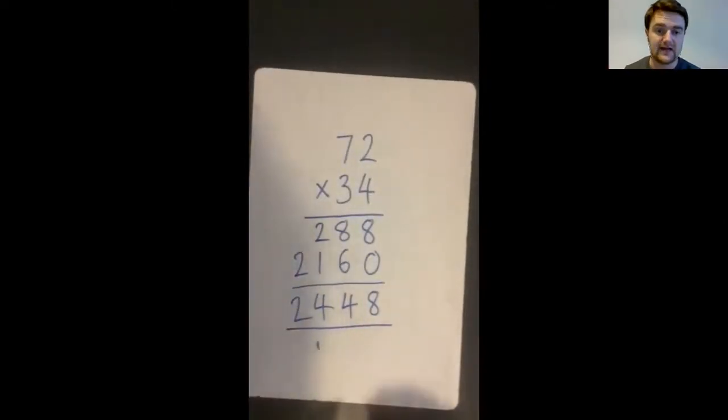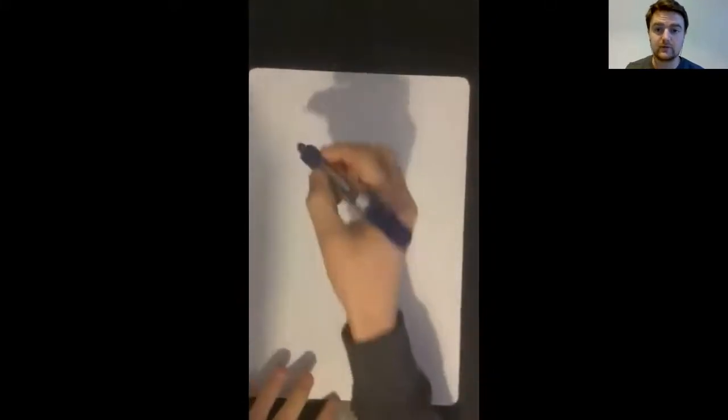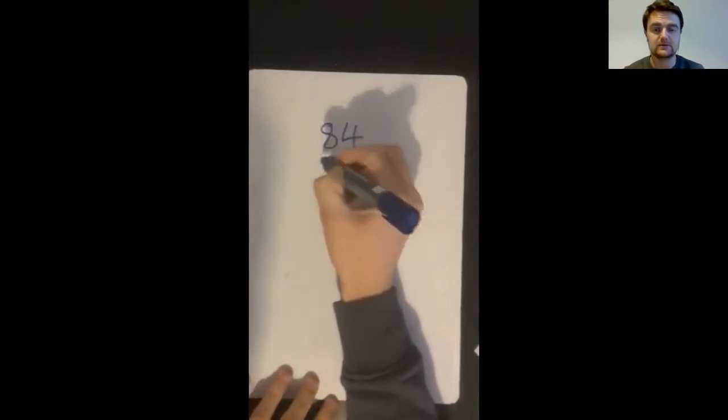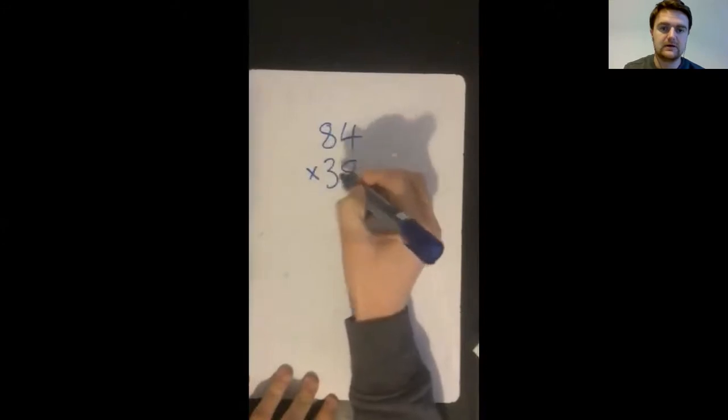So let's have a look at a second example as well. You can see that the layout of this is really, really important to ensure that you've got the numbers on top of each other in the correct spot. So this time we're looking at 84 multiplied by 38.